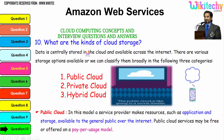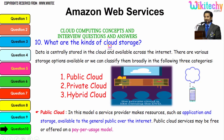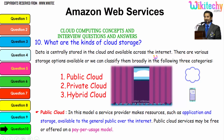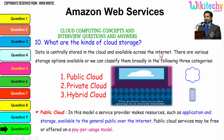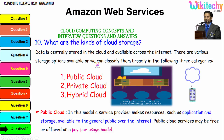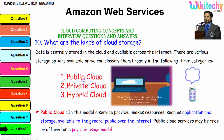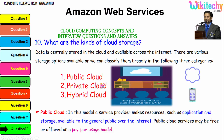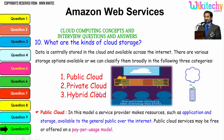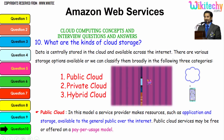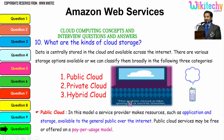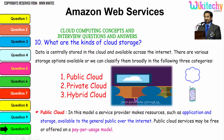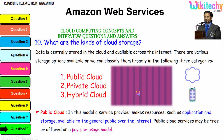Now let's talk about the kinds of cloud storage. Data is centrally stored in the cloud and available across the internet. There are three major storage options, broadly classified into: public cloud, private cloud, and hybrid cloud. You can see the animated illustration here. The public cloud is like going to a movie theater. Private cloud is like owning a DVD at home. Hybrid cloud is like video streaming.